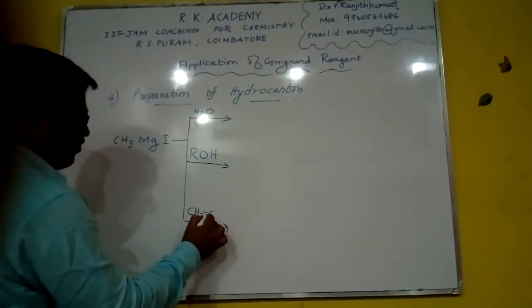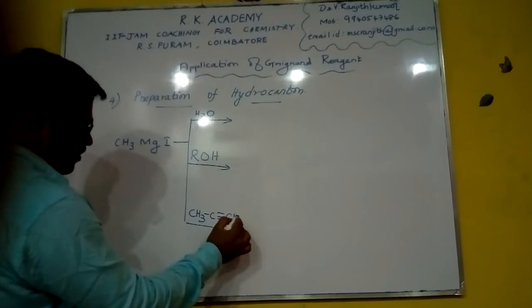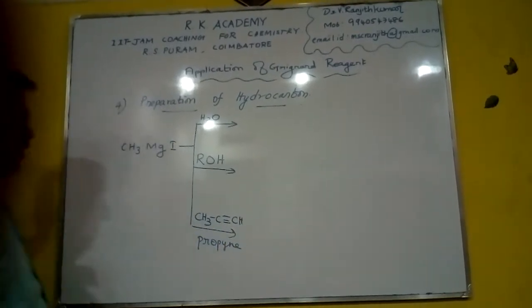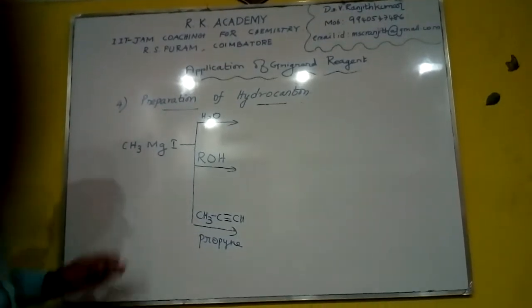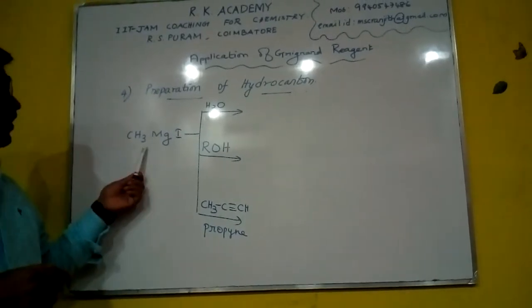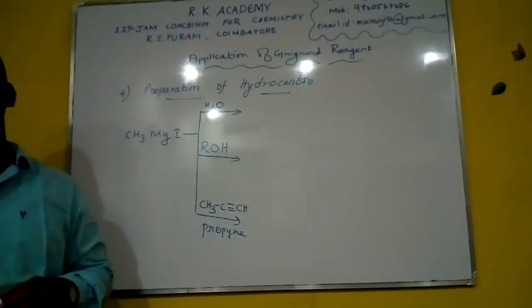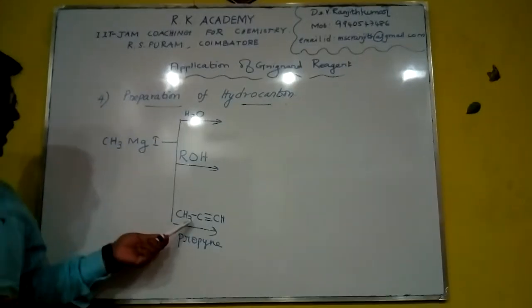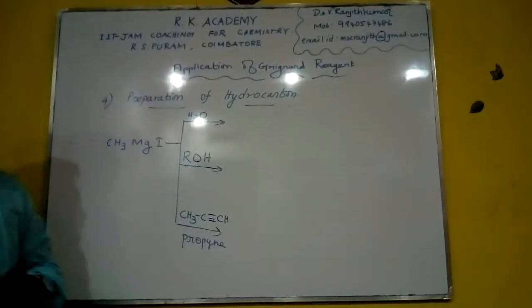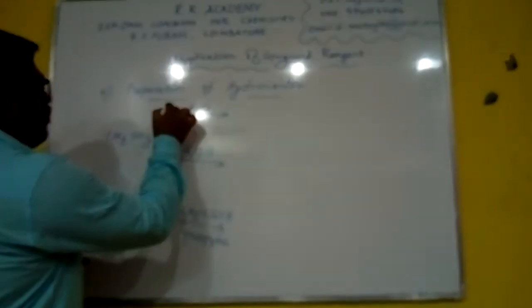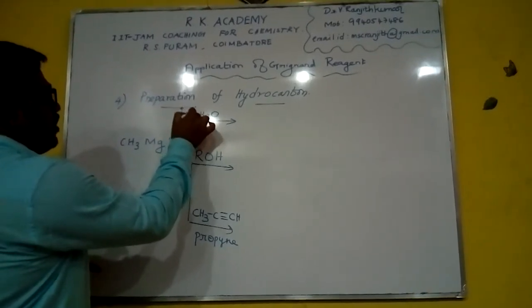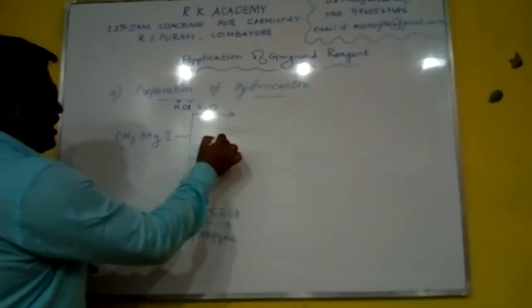See here. Generally, metal Grignard reagents are stable in ether solvent. When we take water, alcohol, and alkyne solvents, it will give... The mechanism is here. Consider it as H plus or H minus like that, here H plus.